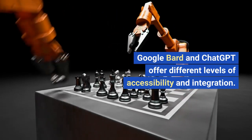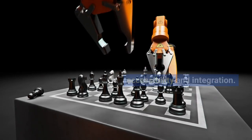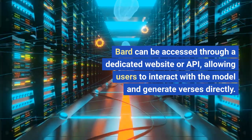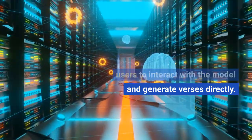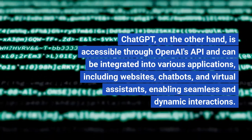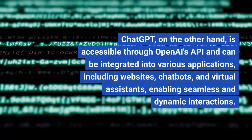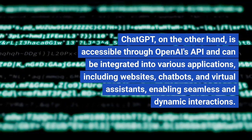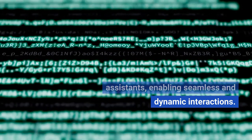Google Bard and ChatGPT offer different levels of accessibility and integration. Bard can be accessed through a dedicated website or API, allowing users to interact with the model and generate verses directly. ChatGPT, on the other hand, is accessible through OpenAI's API and can be integrated into various applications, including websites, chatbots, and virtual assistants, enabling seamless and dynamic interactions.